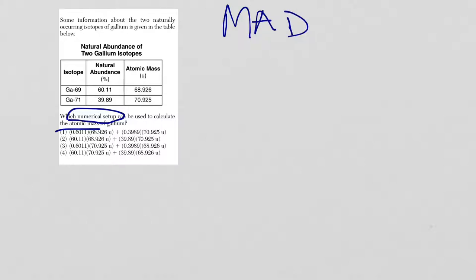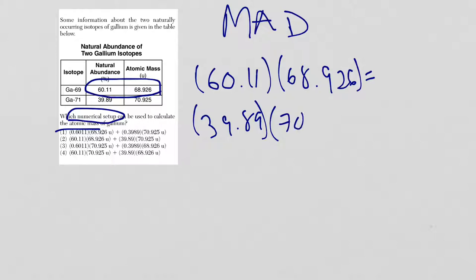So, multiply. What are you multiplying? For each isotope, you multiply the percent and atomic mass. So, the 60.11 times 68.926 and the 39.89 times 70.925. So, get those two calculations on paper, and then come on back and let's look at the next step.